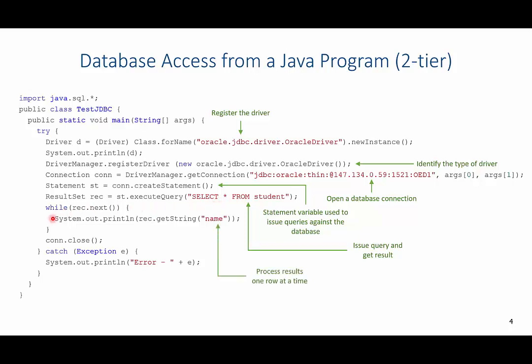We then loop through all the records one at a time. The while loop finds the first record, executes the logic, then gets the next record and repeats until there are no more records. In this case, we print out the name of the student from each record, and then close the connection. We are not going to be programming in a Java environment, but this gives perspective on how this would work.